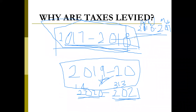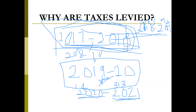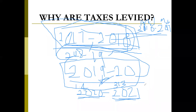So did you understand? For 2017-18, the previous year is 2016-17 and the assessment year is 2018-19. Similarly, 2018-19's previous year is 2017-18 and its assessment year is 2019-20. And for 2019-20, the previous year is 2018-19 and the assessment year is 2020-21. These are topics we discussed in the previous class.